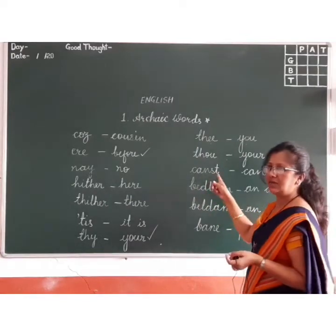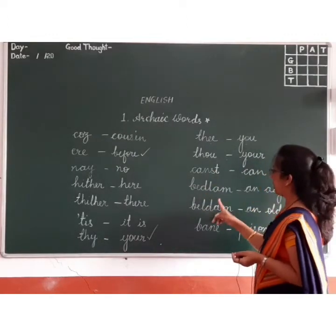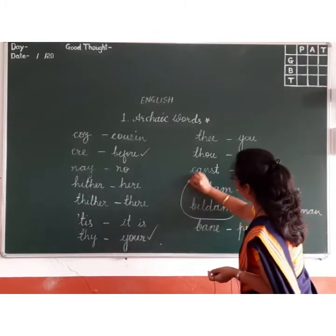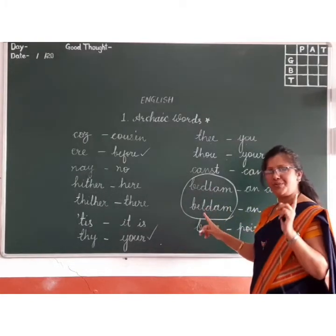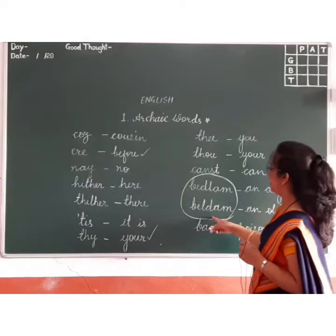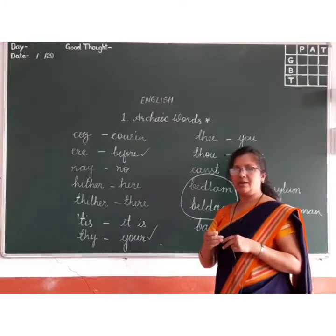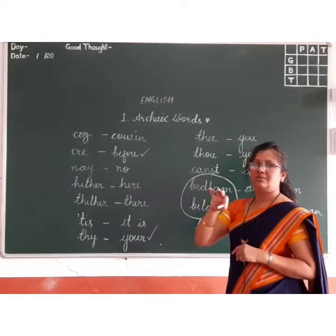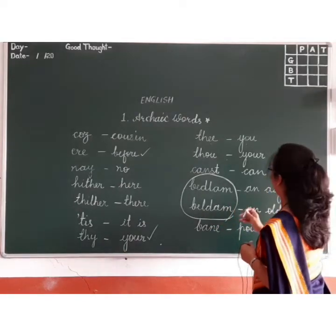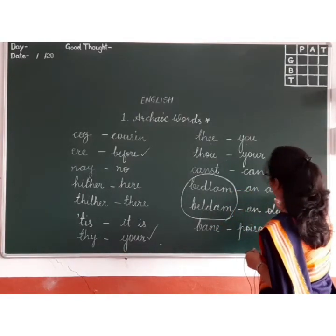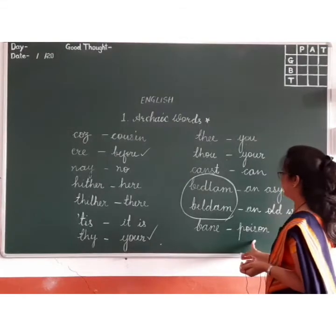Also, 'thou' means you — so 'thy' and 'thou' both relate to your/you. One more: 'canst' — do remember, canst does not mean cannot; canst means can. Then look very carefully at 'bedlam' and 'beldam' — the spellings are similar and you may get confused. 'Bedlam' means an asylum, which is a place where certain patients are treated. 'Beldam' means an old woman.